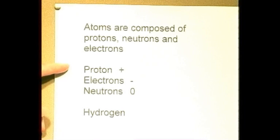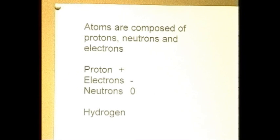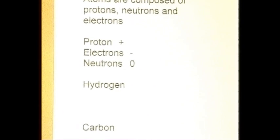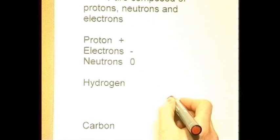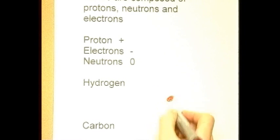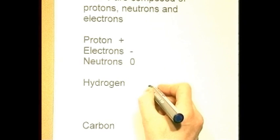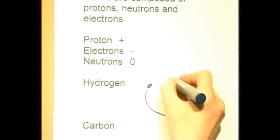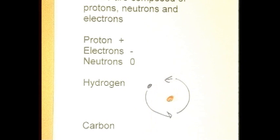So: protons positive, electrons negative, neutrons neutral — they have no charge. Now the simplest atom is a hydrogen atom. This consists of one central proton, so the nucleus only contains one proton, and then circulating round about that there is a single electron. So the hydrogen atom: one proton and one electron.